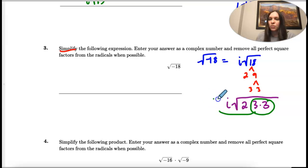So that comes out one time and we multiply what's on the outside. And then on the inside we just have the two left over. So we would say this as 3i square root of 2.